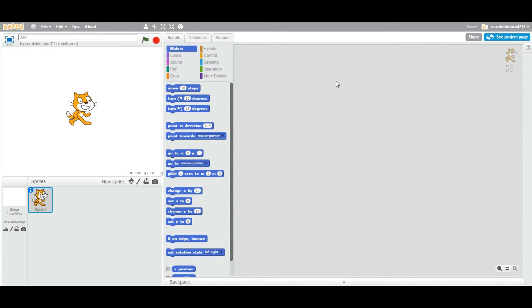Welcome to the practical. When you create a default project, you have a cat. By default, the cat is the only sprite you have on the stage. You can go to script tab and drag this particular block onto your script area.